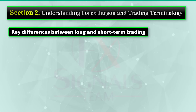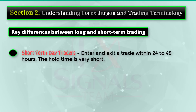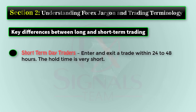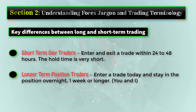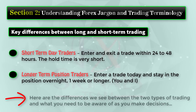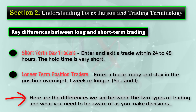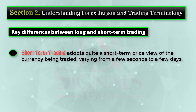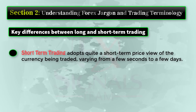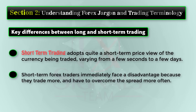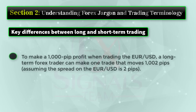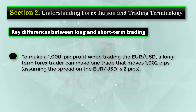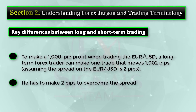Key differences between long and short-term trading: short-term day traders enter and exit a trade within 24 to 48 hours. Longer-term position traders enter a trade and stay in the position overnight, one week, or longer. Short-term trading adopts a short-term price view, varying from a few seconds to a few days. Short-term traders immediately face a disadvantage because they trade more and must overcome the spread more often. To make a 1,000-pip profit on EUR/USD, a long-term trader making one trade needs only 2 pips to overcome the spread.